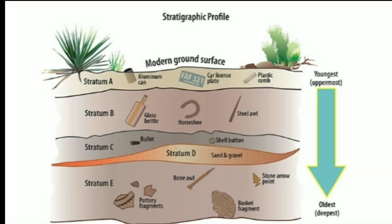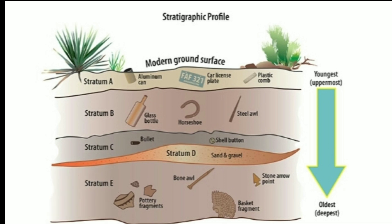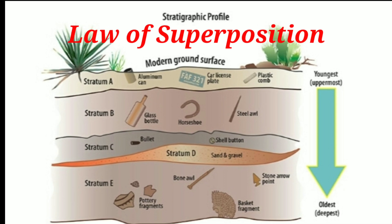The main relative dating method is stratigraphy, which is the study of layers of rocks or the objects embedded within those layers. The method is based on the assumption — which nearly always holds true — that deeper layers of rock were deposited earlier in Earth's history and thus are older than more shallow layers. The successive layers of rock represent successive intervals of time.